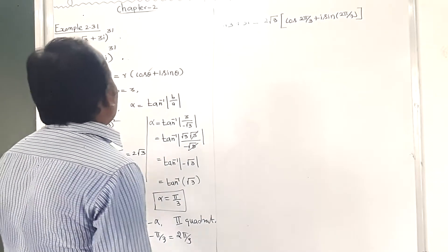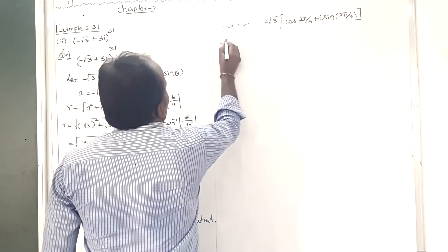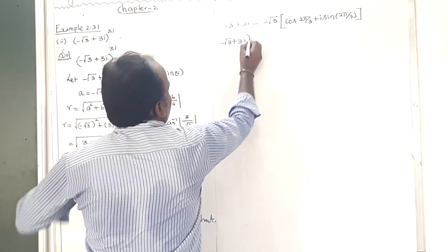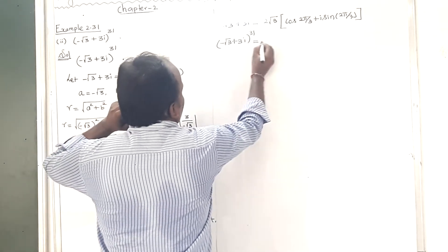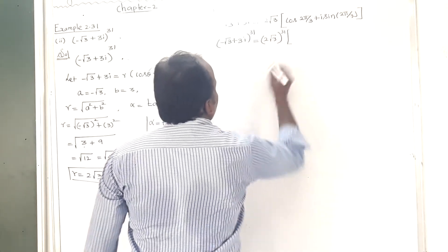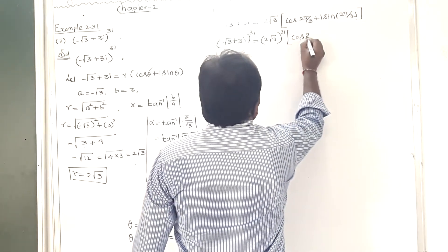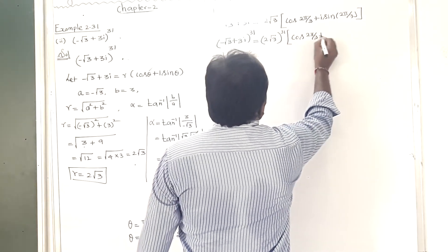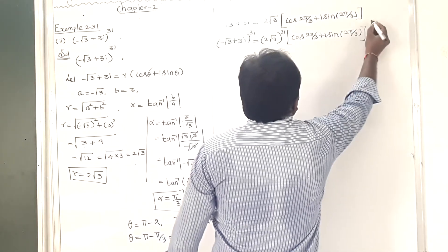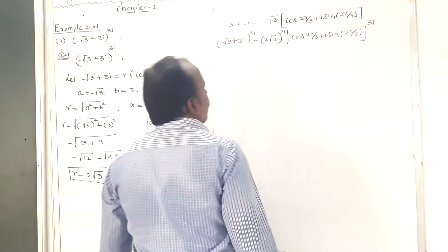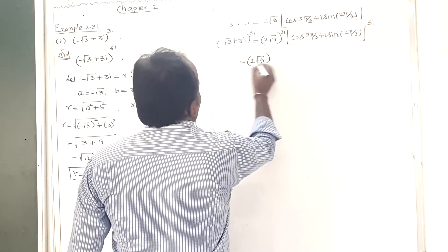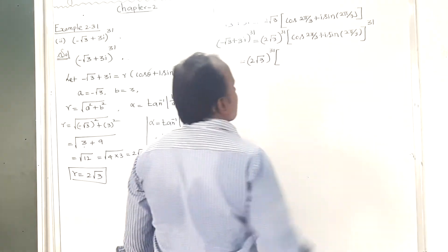Now taking the power 31 on both sides: (-√3 + 3i)^31 = (2√3)^31 · (cos(2π/3) + i sin(2π/3))^31. Applying De Moivre's theorem to the trigonometric part.